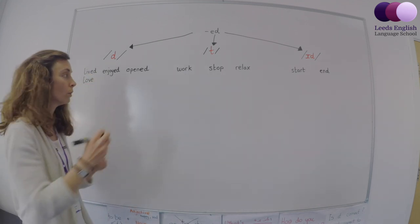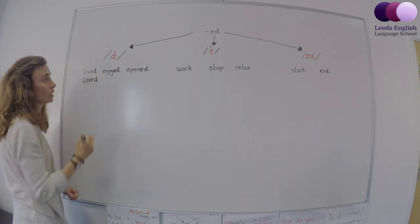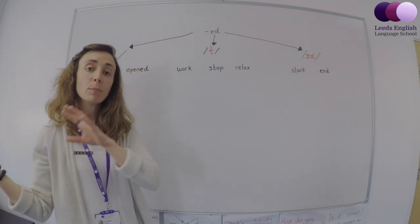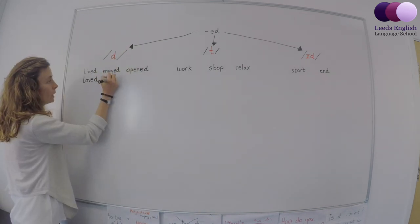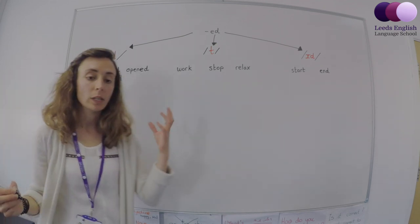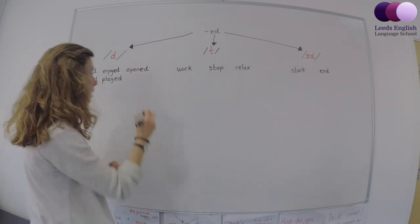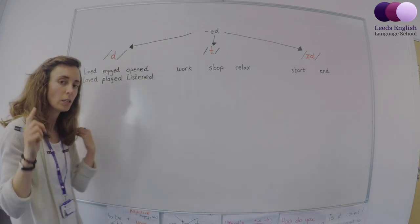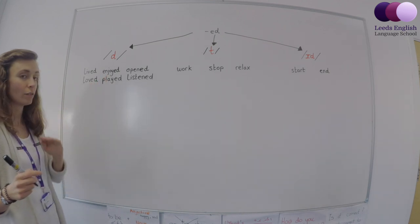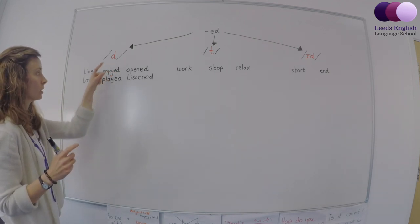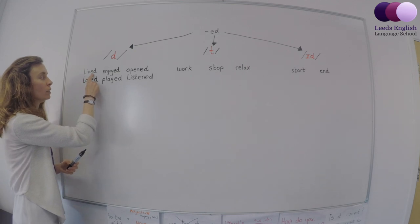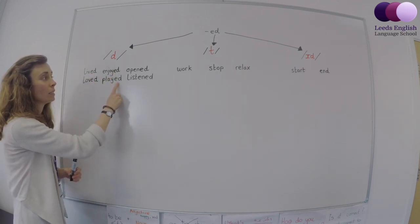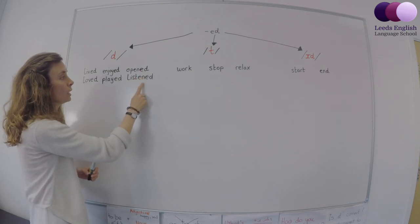Opened. Loved. Love. The past simple is loved. Another one like enjoy is play. We say played. Another one like open, we say listened. So have a listen now to these different words and think about the D sounds. We have lived, loved, enjoyed, played, opened, listened.